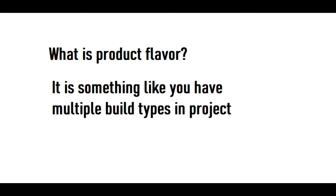In product flavor you can define different modes — like a variable that, if you build a free version, you can use that variable, and for the paid version you can use a different variable for different functionality of each variant of the app. You can also configure things like application ID and minimum SDK version for different build variants in product flavor.